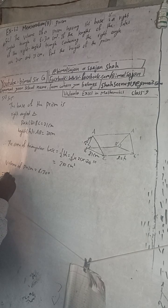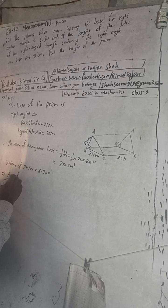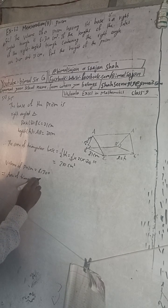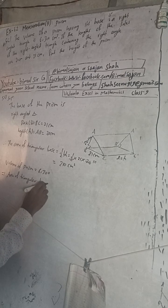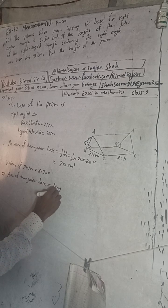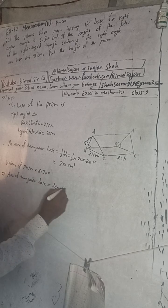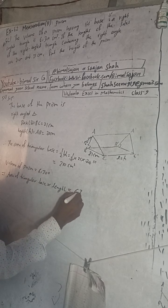And also the formula for the volume of the prism is what? Area of triangular base into length. Area of triangular base into length. In prism, this is equal to 6,300.